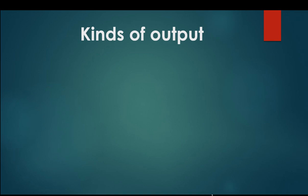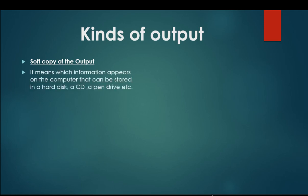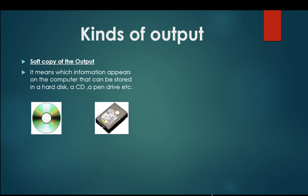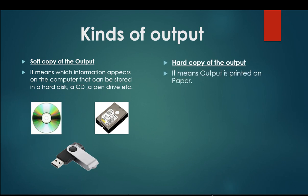Kinds of output. We are having two types of output. One is soft copy of the output. It means information that appears on the computer that can be stored in a hard disk, a CD, a pen drive, etc. Hard copy of the output means output is printed on the paper.